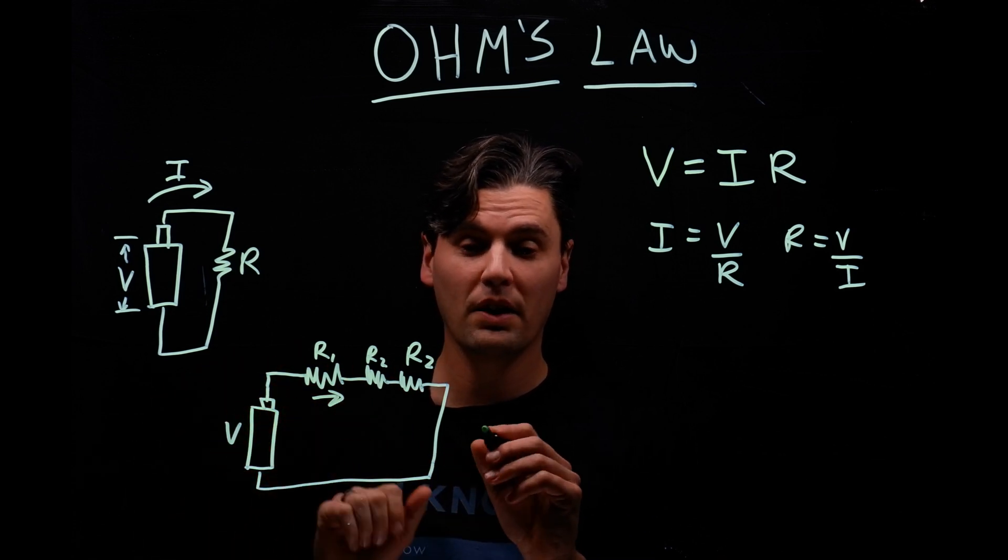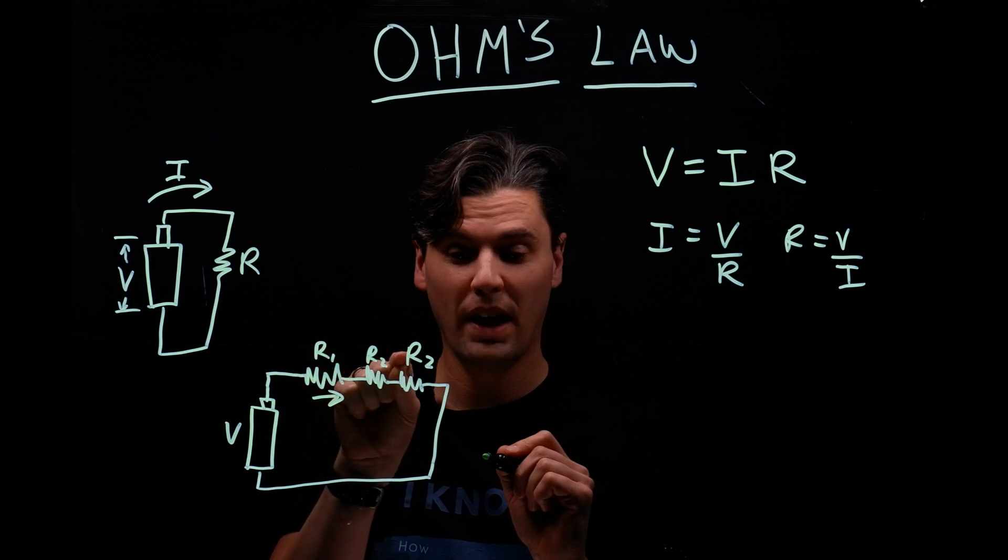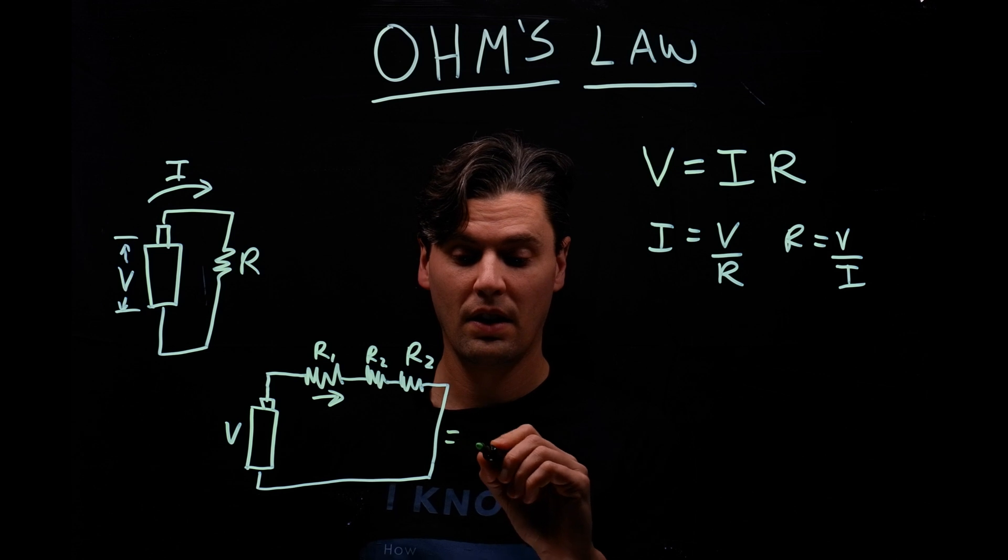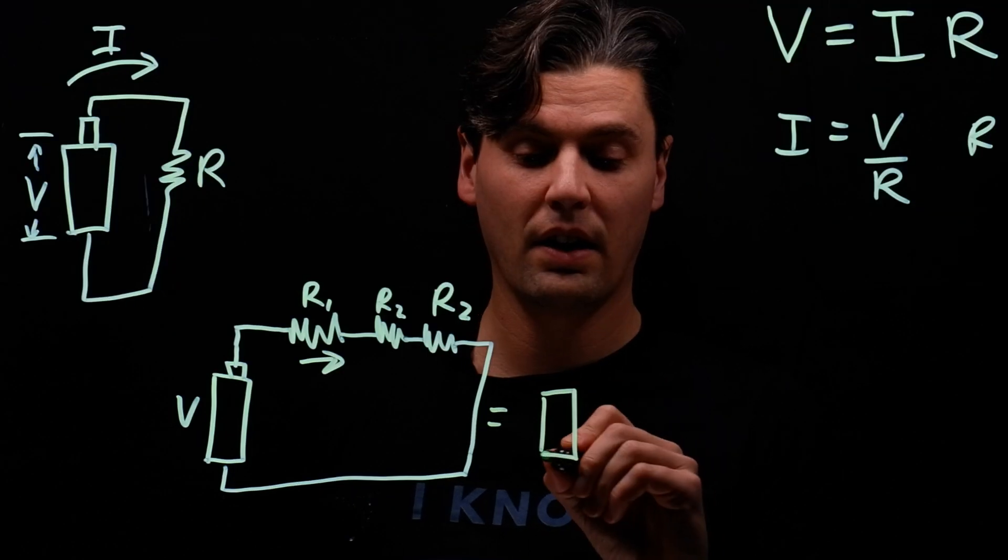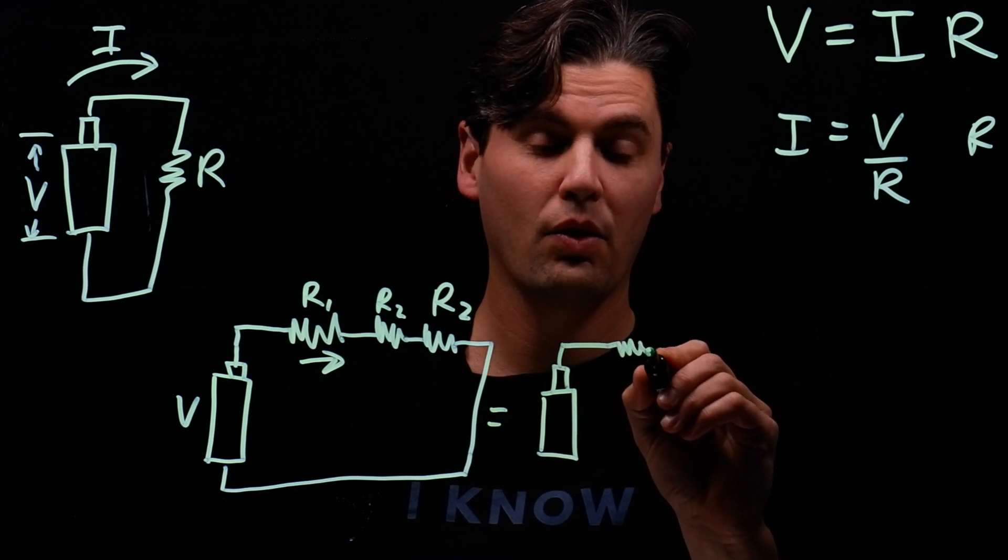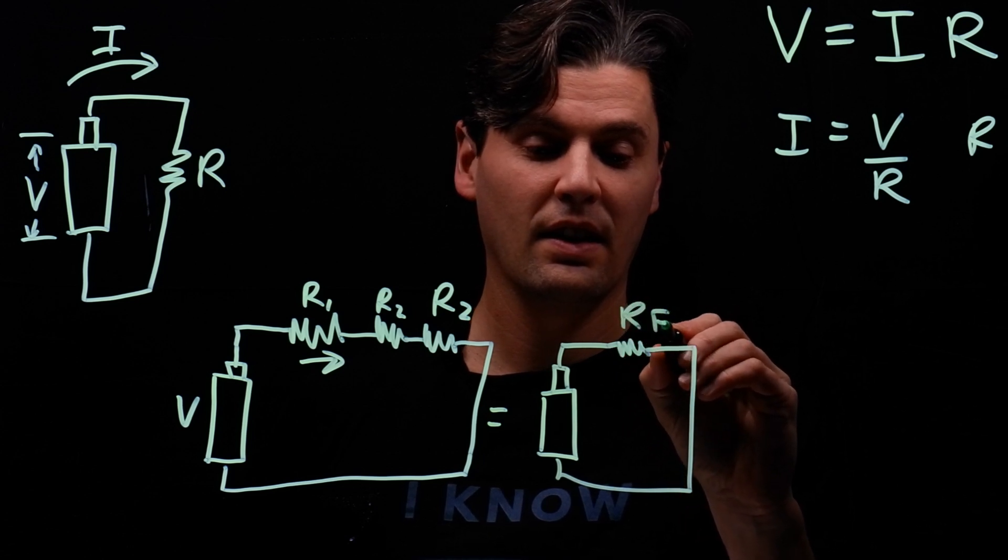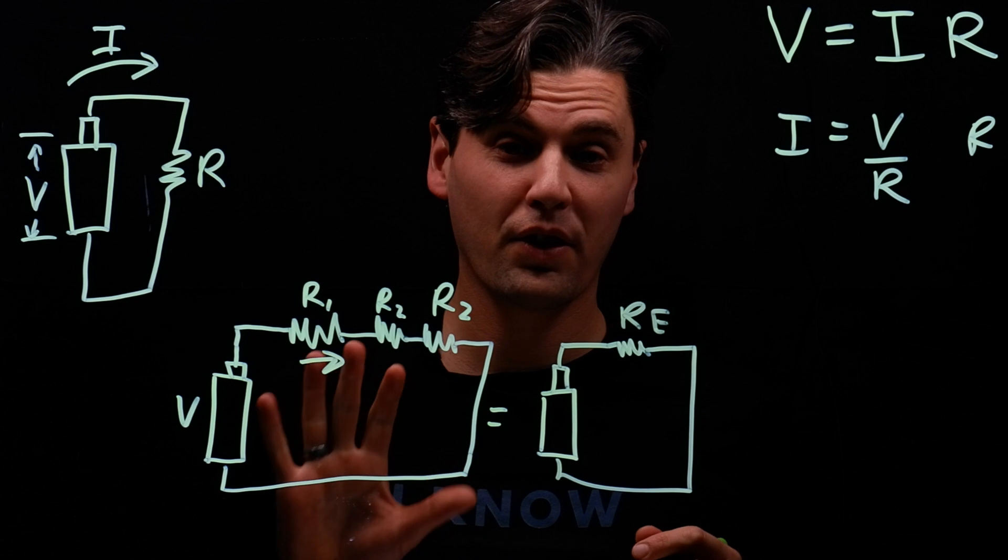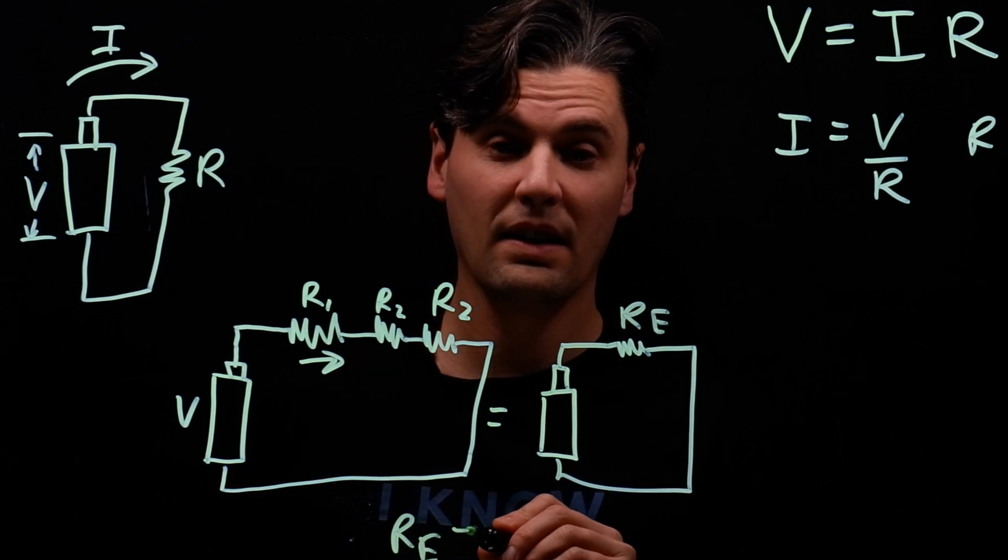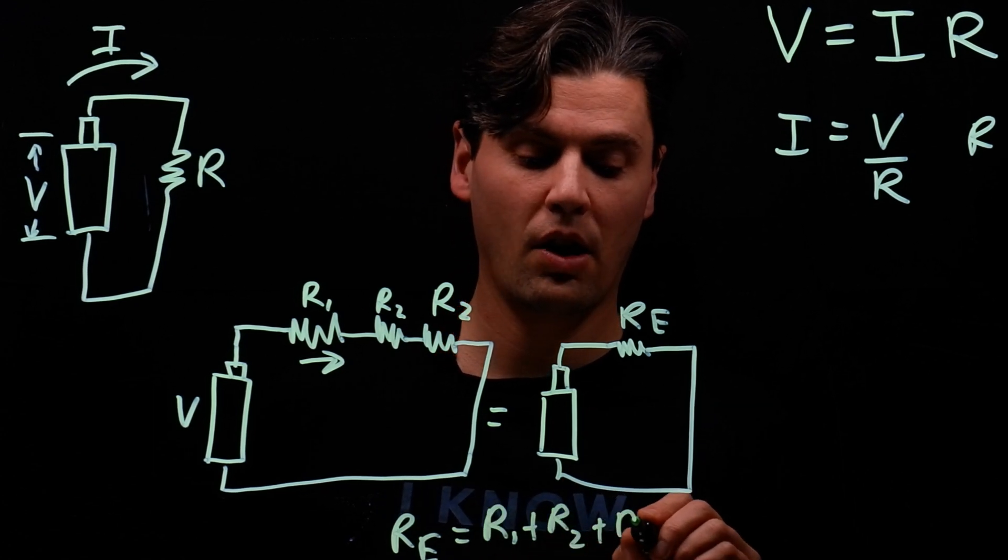So if you want to have what we call an equivalent or effective resistance to what we have in these three resistors here, when you're adding resistors in series you can think of having the same circuit, but you have one resistor instead. So that's R effective. And for the case of series, R effective is just equal to R1 plus R2 plus R3.